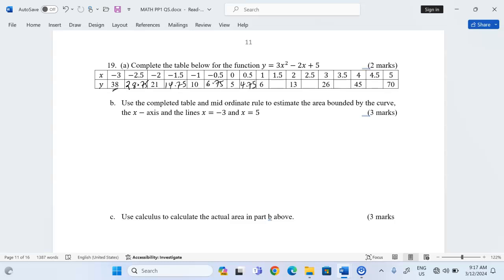At 1.5, we shall have 8.75. At 2.5, we shall have 18.75. At 3.5, we shall have 34.75. And finally, at 4.5, we shall have 56.75.